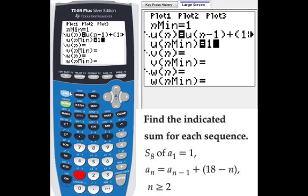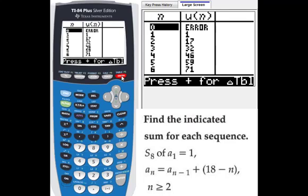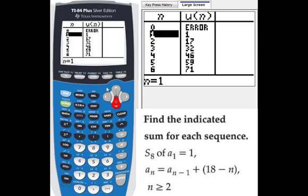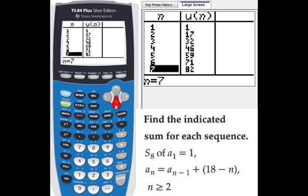Then this time we go to second graph. One way is to add a sub 1 through a sub 8. That's one way to figure out s sub 8.